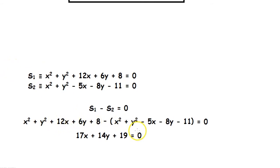So finally, when we simplify this, we get an equation 17x + 14y + 19 = 0. This will be the equation of the common chord of these two circles.